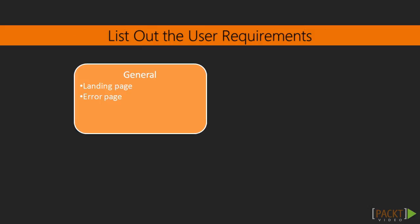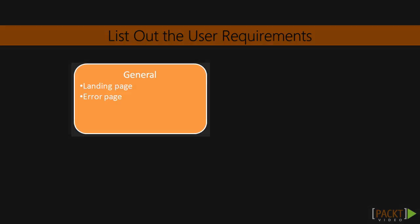We divide the user requirements into a few categories. First, general function. This includes the landing page and the error page, which will be used to display readable error messages to the user.